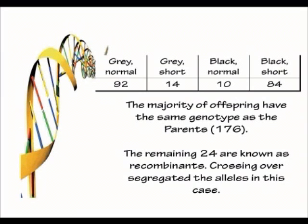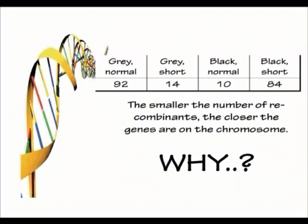The number of recombinants — that 24 — actually gives us quite a lot of information. The smaller the number of recombinants, the closer together the genes are on the chromosome. If the genes are really close together, crossing over can't segregate them very easily or very often, so there are few recombinants. If the genes are located far apart, crossing over is likely to segregate them more often, so you'll have more recombinants.